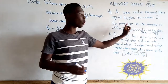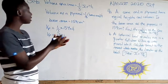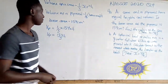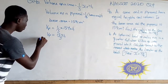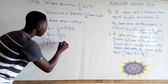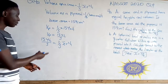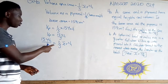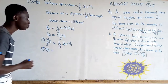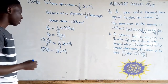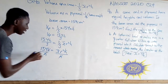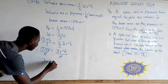The question says a cone and a pyramid have equal height and volume. So we equate the volume of the cone and the volume of the pyramid: 154h over 3 equals one-third times pi r squared times h. We multiply both sides by 3 so the denominator cancels, giving 154h equals pi r squared h. We then divide both sides by h, leaving pi r squared equals 154.